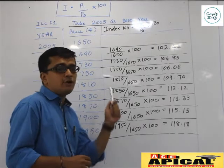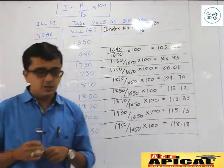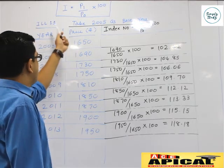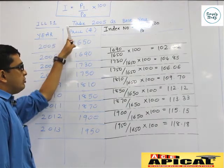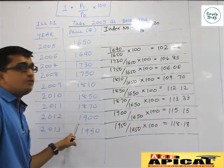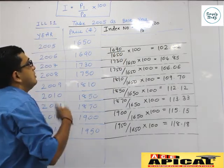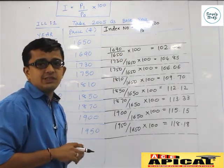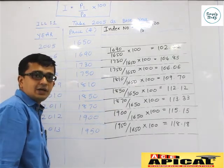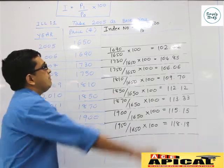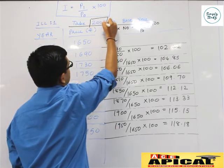Now let's put the formula of fixed base index number into an example and understand. Here we are given prices of a few commodities and the year. Different years have been given and prices of the commodity for those years have been mentioned. The formula for fixed base index number is P1 upon P0 into 100, where P1 stands for current year and P0 stands for base year.